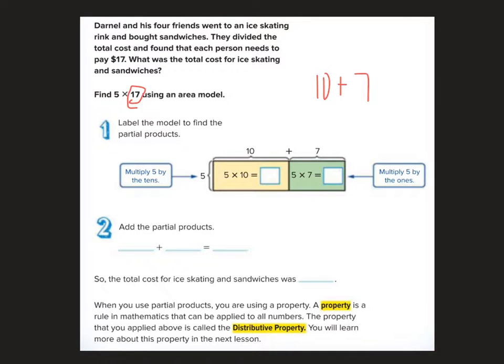So we're going to label the model to find the partial products. So I have 5 on this side, this is kind of looking like an area, right? If this was a rectangle, in order to find the area, I multiply the width and the length. Okay, so if I do 5 times 10, I know that's 50. And 5 times 7 is 35.